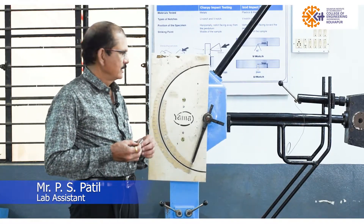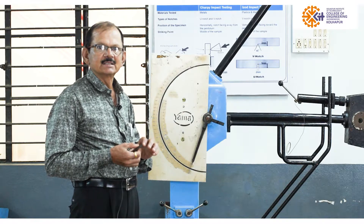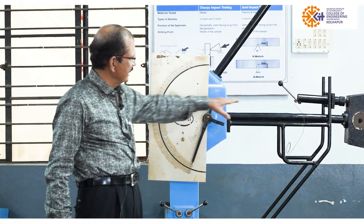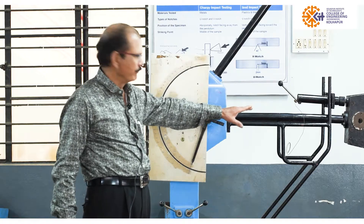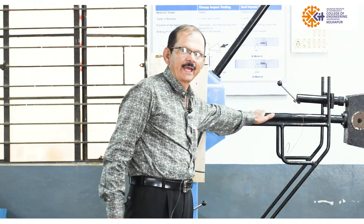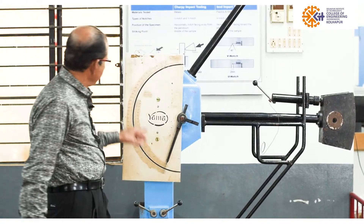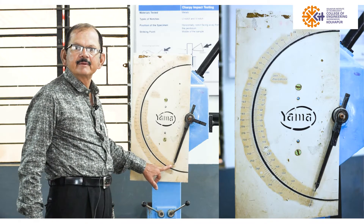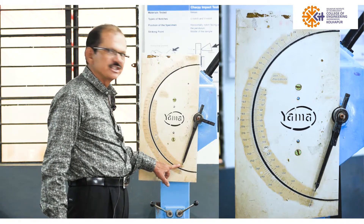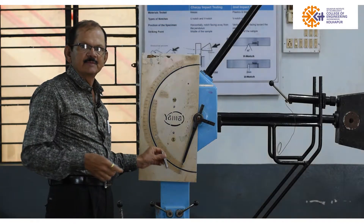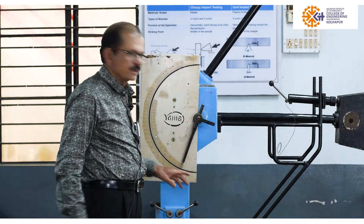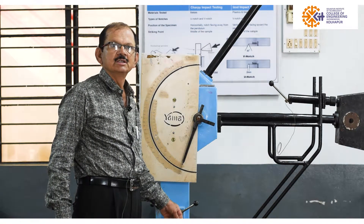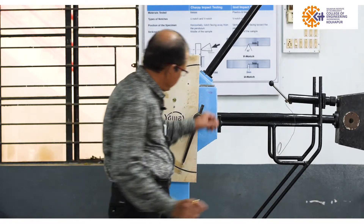We are now performing the impact test on various metals using the Izod impact test. The arrangement is set up for the Izod test where the angle of fall of the hammer is 87 degrees. This inner scale is used for this test, where the maximum energy stored by the hammer is 168 joules. We will first take a free fall of the hammer to check whether any frictional loss is present.